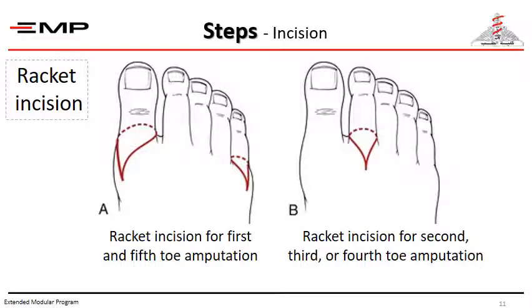Several incisions can be used. The most popular is the racket incision. For amputation of the first and fifth toes, we prefer to orient the handle of the racket on the medial or lateral surface of the respective metatarsal head. For the second, third, and fourth toes, the handle of the racket is oriented longitudinally along the dorsal surface of the digit. The rationale is to keep the scar free from pressure.